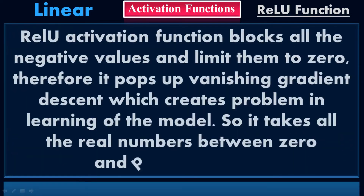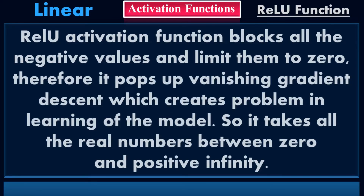ReLU activation function blocks all the negative values and limits them to 0. Therefore, it pops off vanishing gradient descent, which creates a problem in the learning of the model. It takes all the real numbers between 0 and positive infinity. If you put a negative value as an input to the model, it will return only 0. Whatever value you put in negative form, you will only get 0 as an output. There is a restriction for negative values — you will get only 0 in the output.